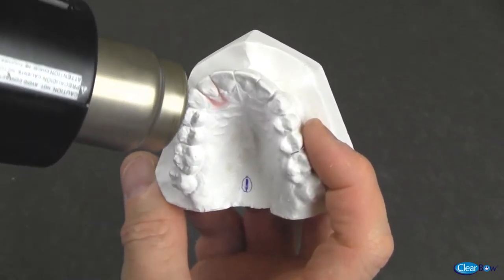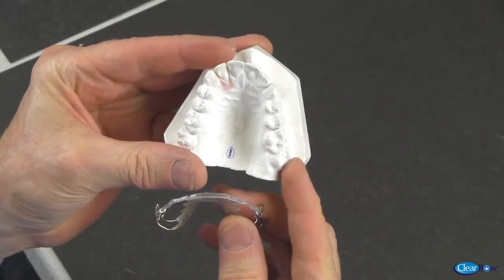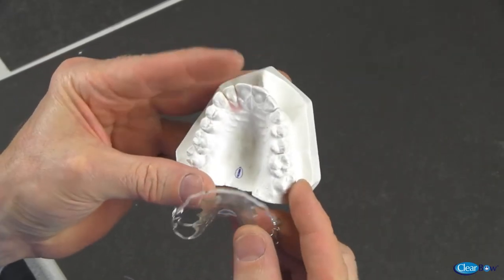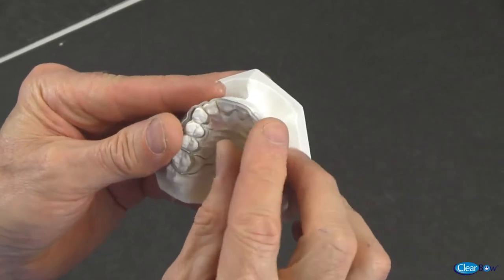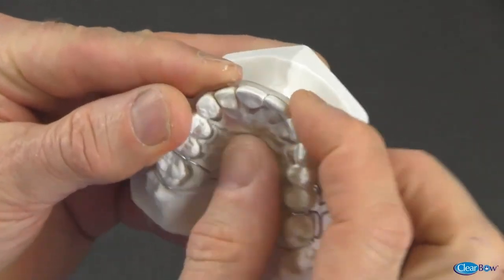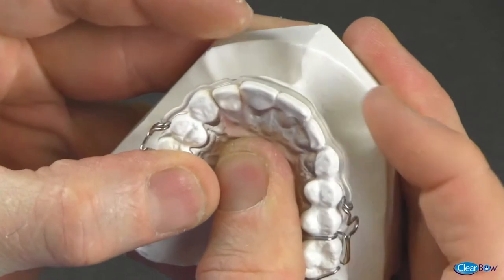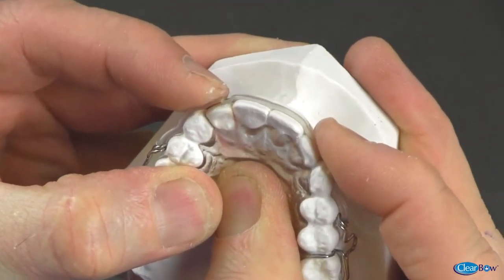Heat is applied on model number one to soften the wax. The retainer with the adjusted clear bow is placed on this model. The clear bow will apply pressure to the lateral tooth simulating actual tooth movement.